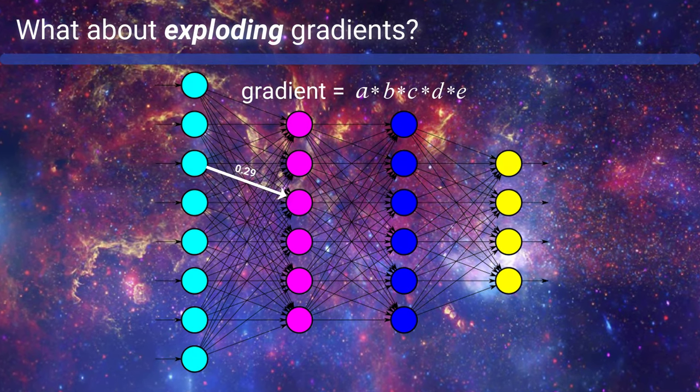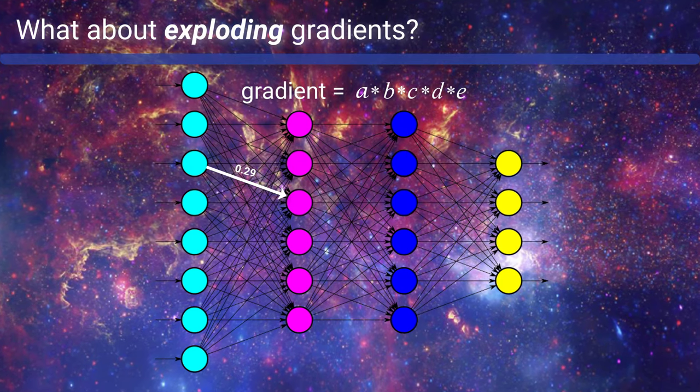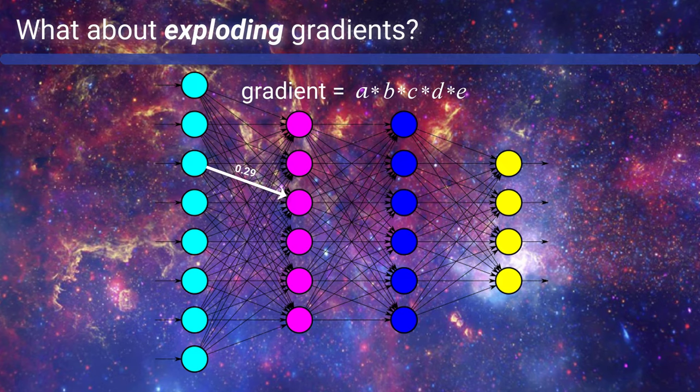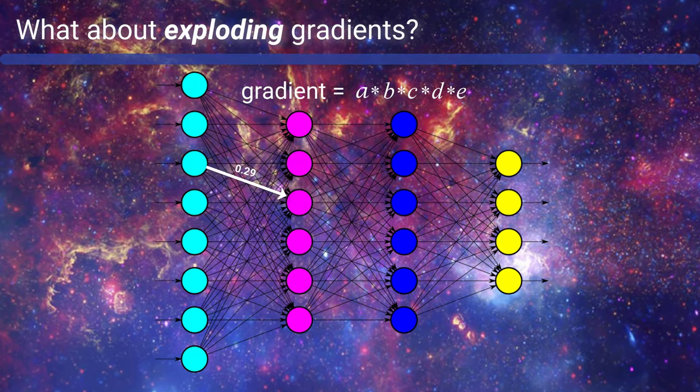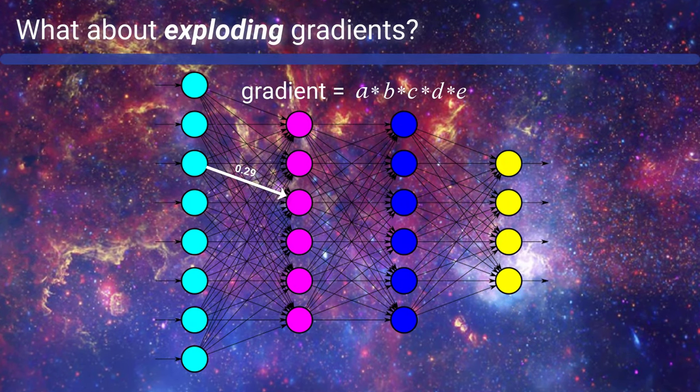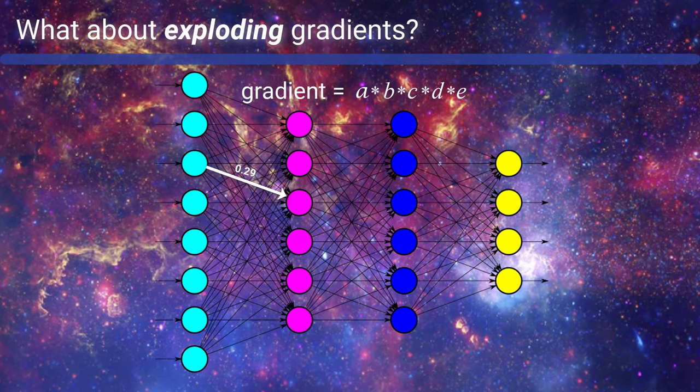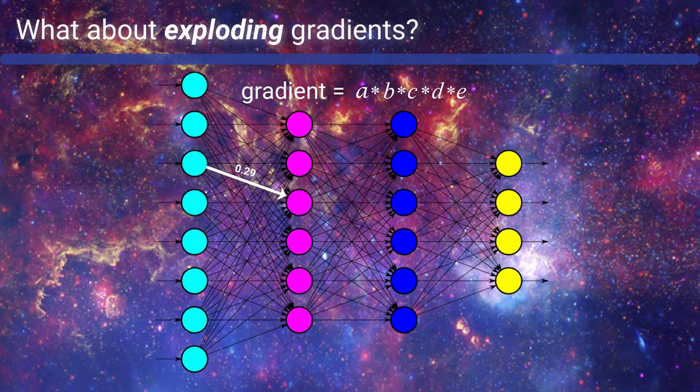Well, if we multiply a bunch of terms together that are all greater than 1, we're going to get something greater than 1, and perhaps even a lot greater than 1. The same argument holds here that we discussed about the vanishing gradient, where the earlier in the network a weight lives, the more terms will be needed in the product we just mentioned. And so the more of these larger value terms we have being multiplied together, the larger the gradient is going to be, thus essentially exploding in size.